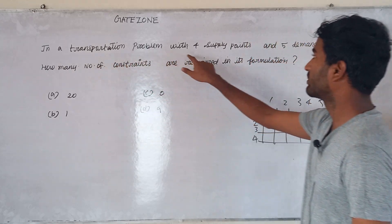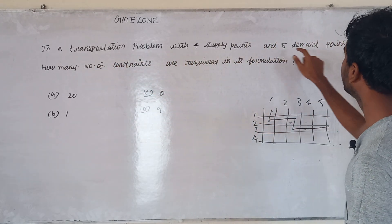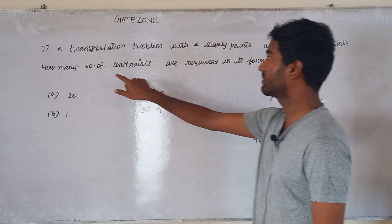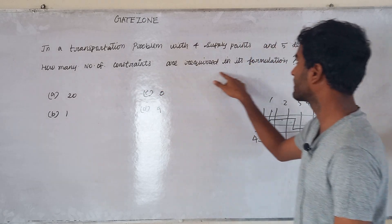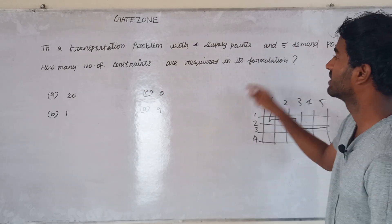In a transportation problem with 4 supply points and 5 demand points, how many number of constraints are required in the formulation?